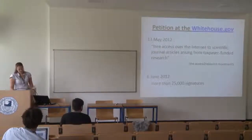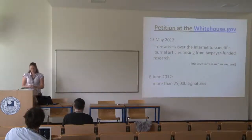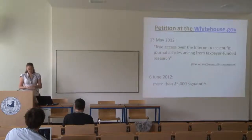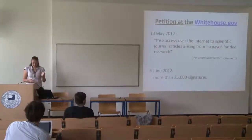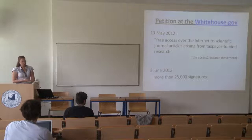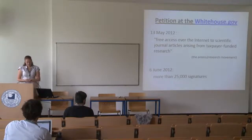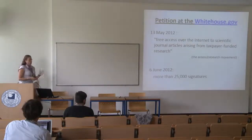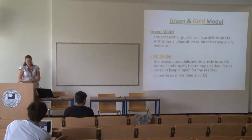Another petition at whitehouse.gov requires free access over the internet to scientific journal articles arising from taxpayer-funded research. This petition was created in May 2012 by the Access to Research movement, and by June 2012 there were over 25,000 signatures. Due to these problems, we have witnessed new models of publication arising from the idea of open access. Today we have two main models: the green model and the gold model.